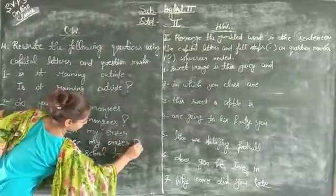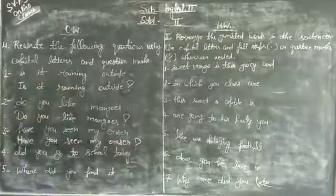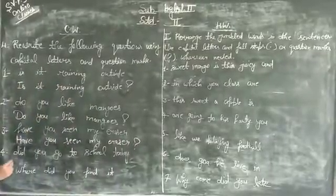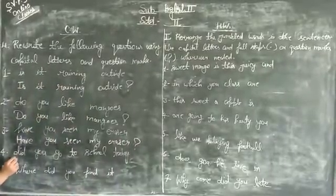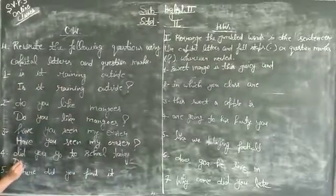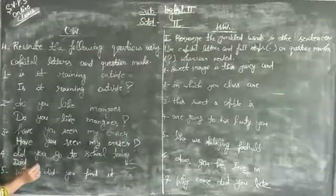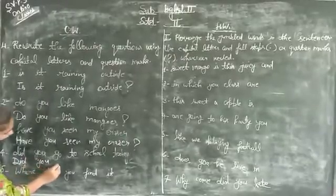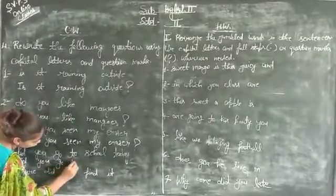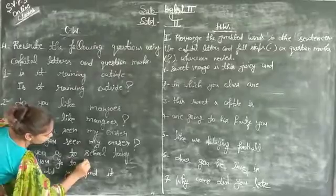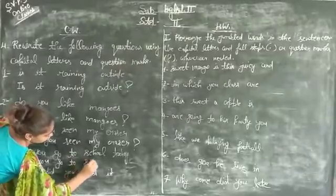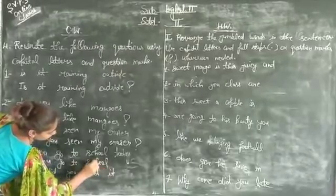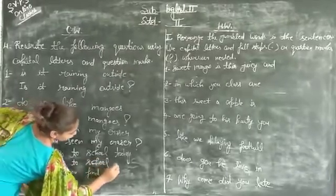Why did you go to school today? Did you go to school today? Exactly — 'Did' starts with a capital D, and a question mark goes at the end.